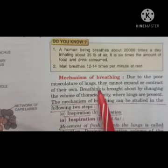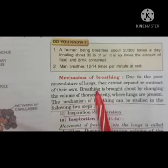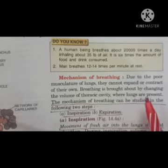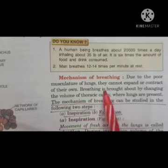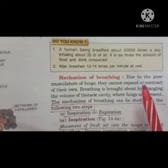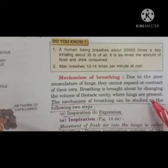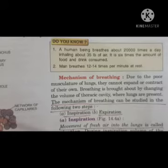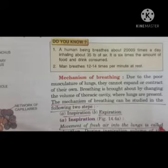Due to the poor musculature of lungs — the muscles of lungs are not so strong, so they cannot expand or contract on their own — breathing is brought about by changing the volume of the thoracic cavity where lungs are present. Our body divides into two parts: the upper part is called the thoracic cavity and the inner part below it is called the abdominal cavity. There is a membrane that is called the diaphragm.